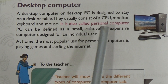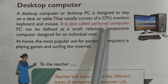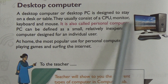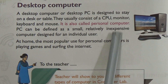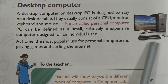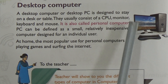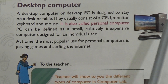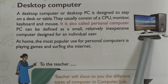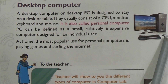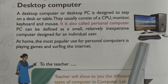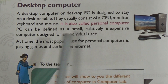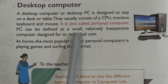It is also called a personal computer — remember this line: the desktop computer is called a personal computer. Here you can see the picture of a desktop computer. You can see there is a monitor, a CPU, keyboard, and mouse. These are the parts of a desktop computer.